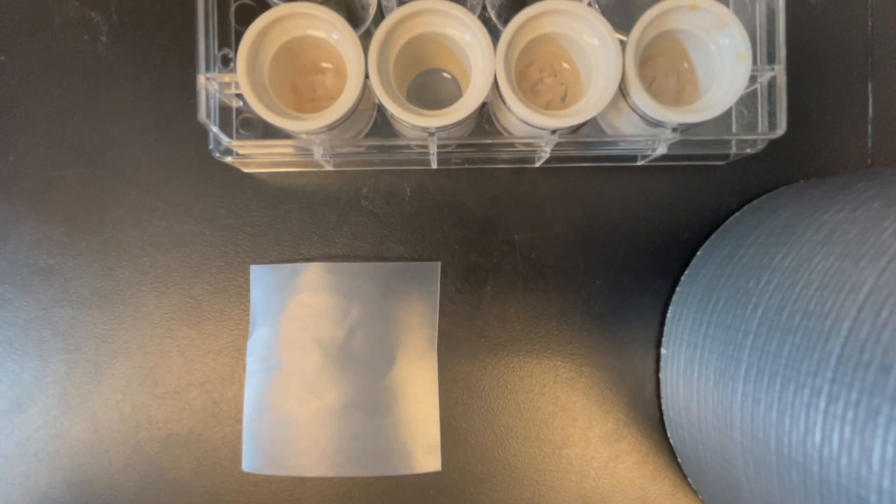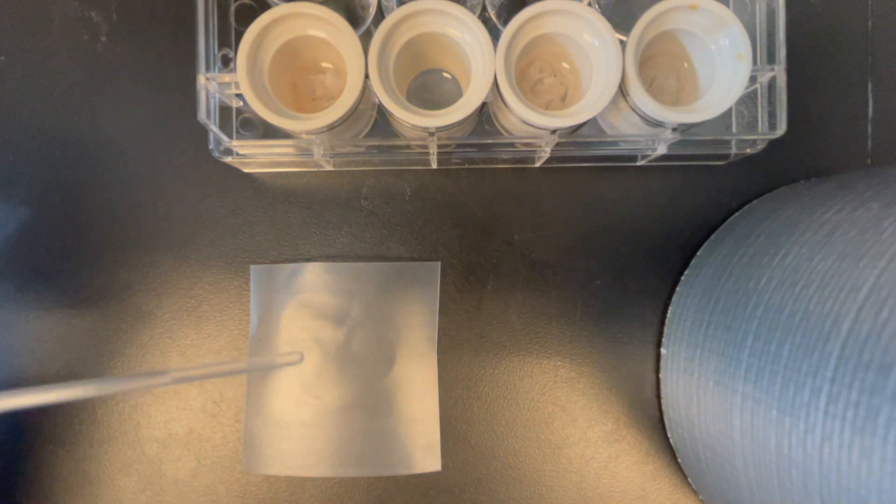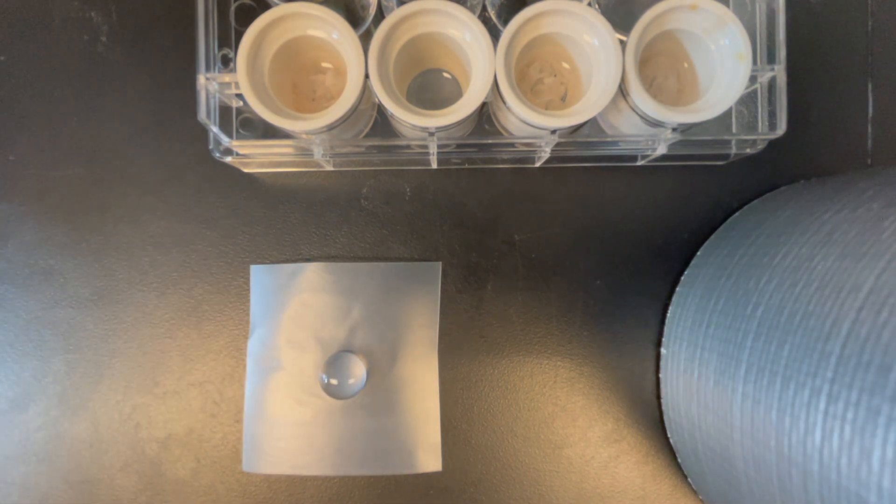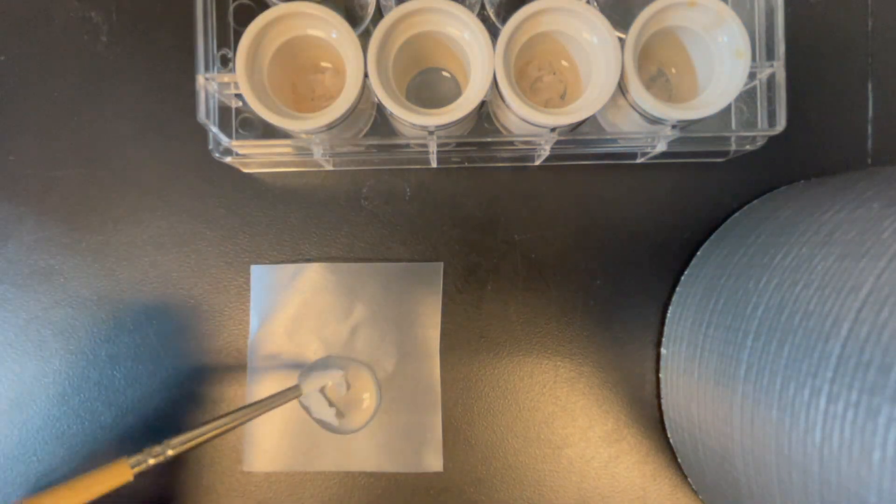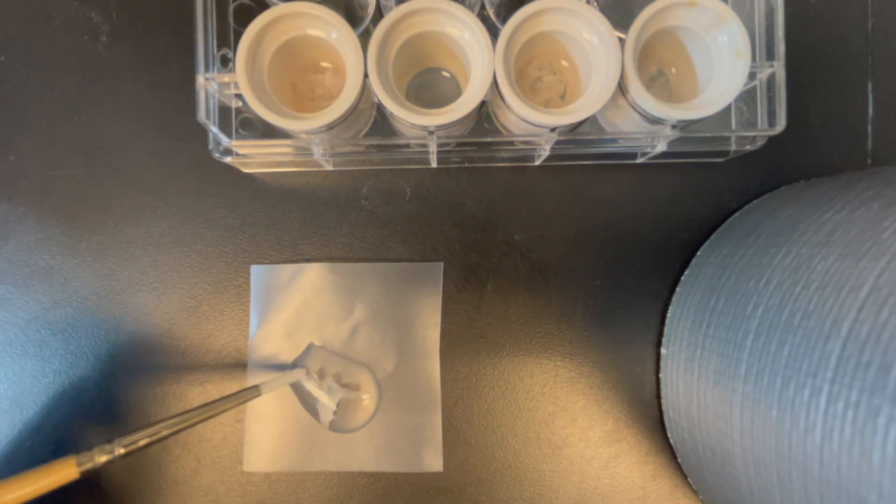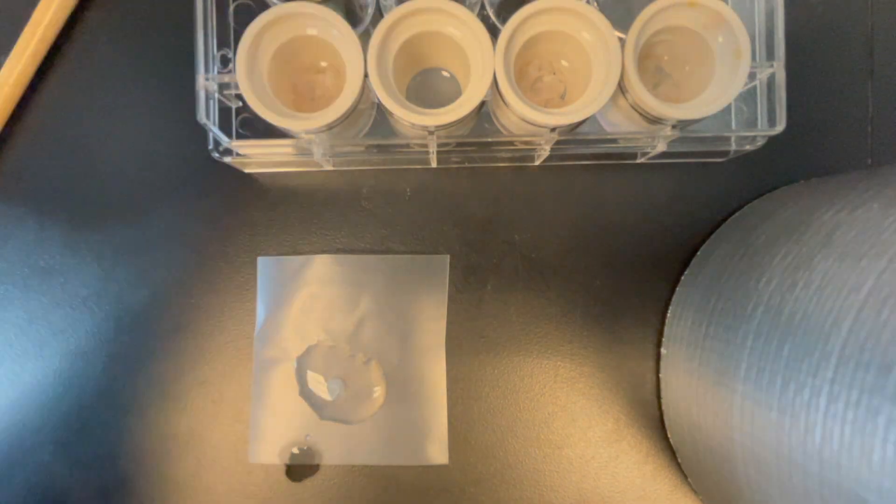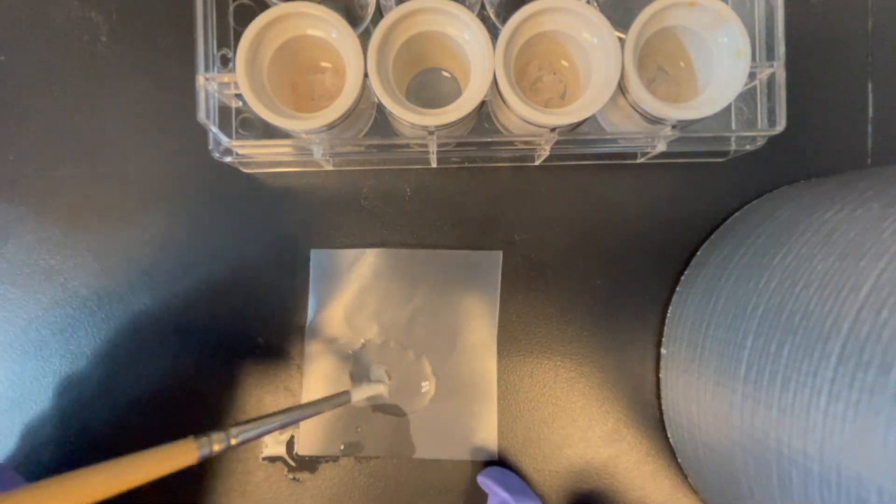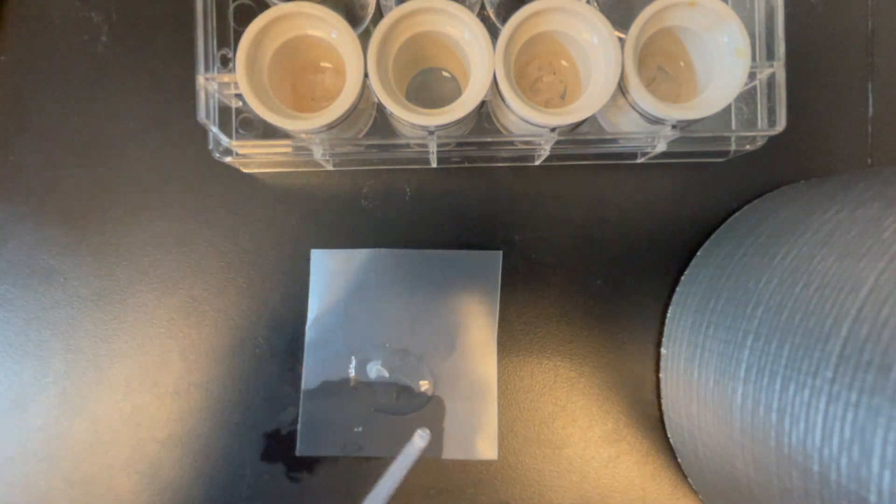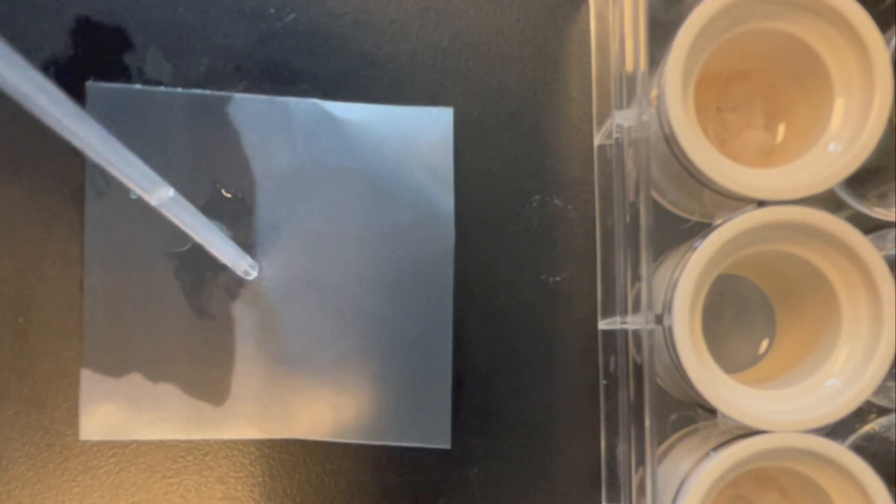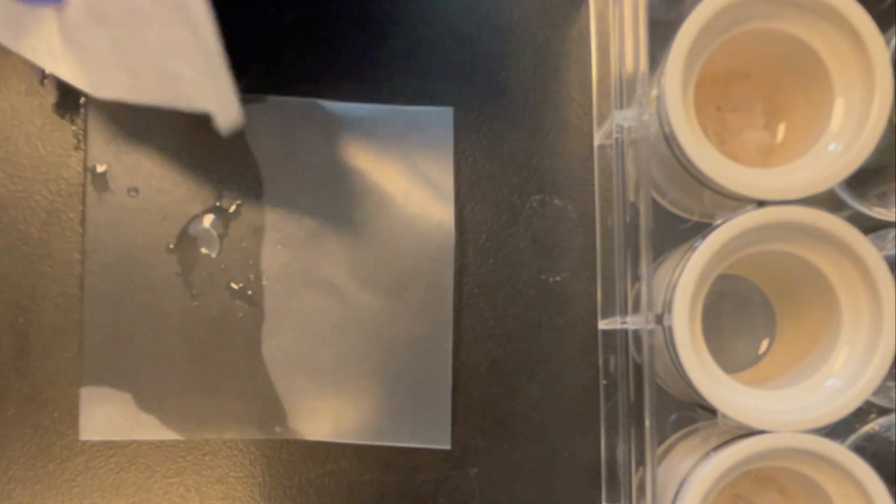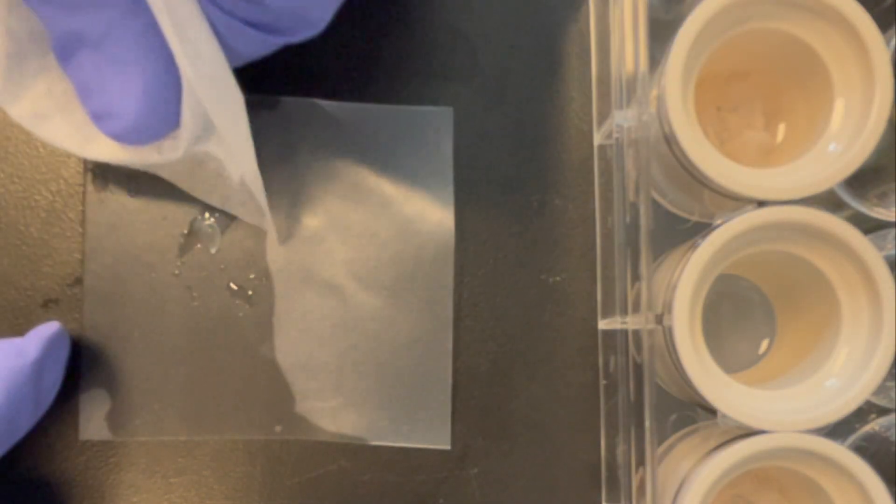Take a square of parafilm and dispense a drop of 1X PBS onto the film. Using a paintbrush or transfer pipette, gently pick up a slice and place onto the drop. Once the tissue is laid flat, use a pipette or Kimwipe to remove excess liquid. Let briefly dry for approximately 1 minute.